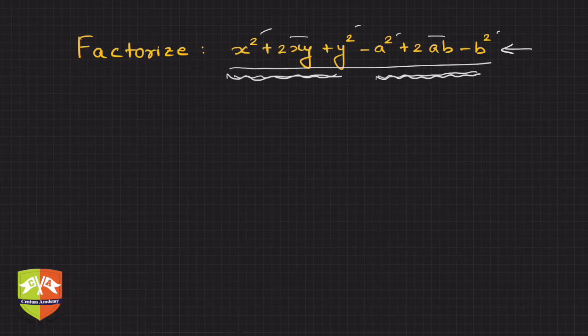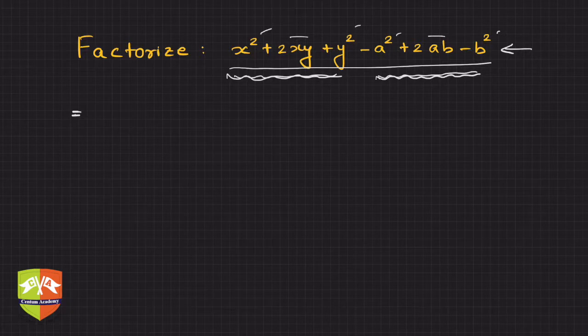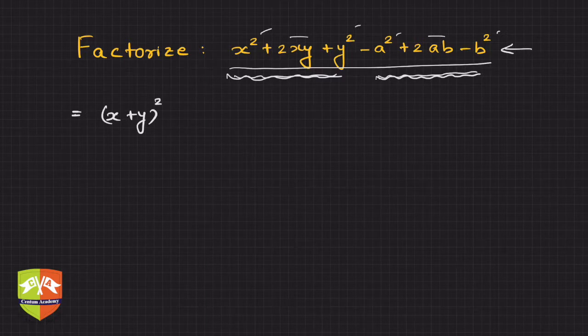Let us see. So clearly, x² + 2xy + y²—there's no brainer—it is nothing but (x + y)². And on the other hand, you can take minus one common.